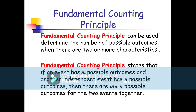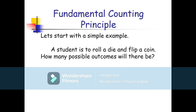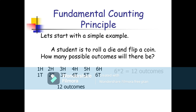For example, a student is asked to roll a die and flip a coin. How many possible outcomes will there be? A die has six sides and a coin has two possibilities, so six multiplied by two is equal to twelve outcomes.